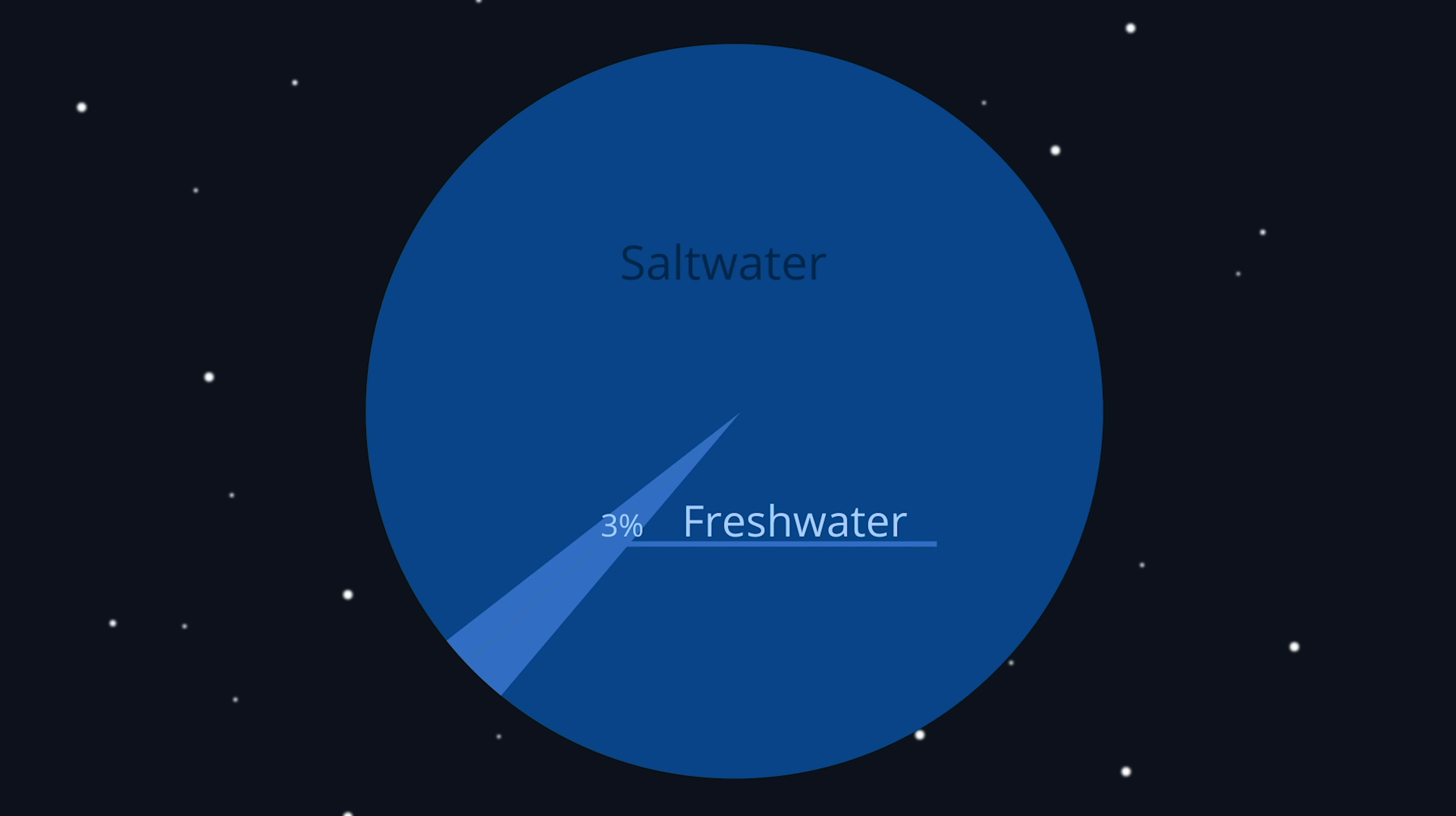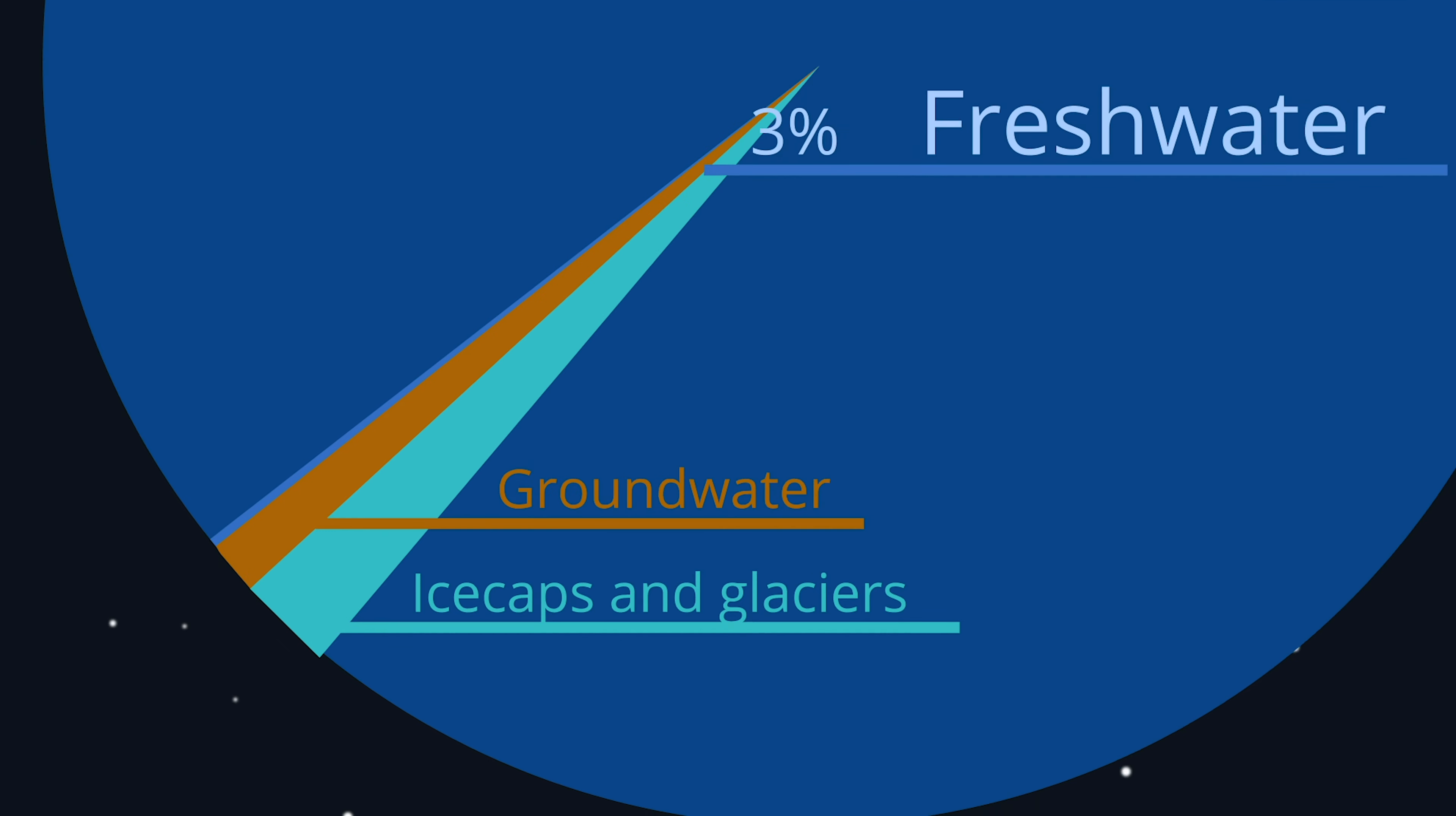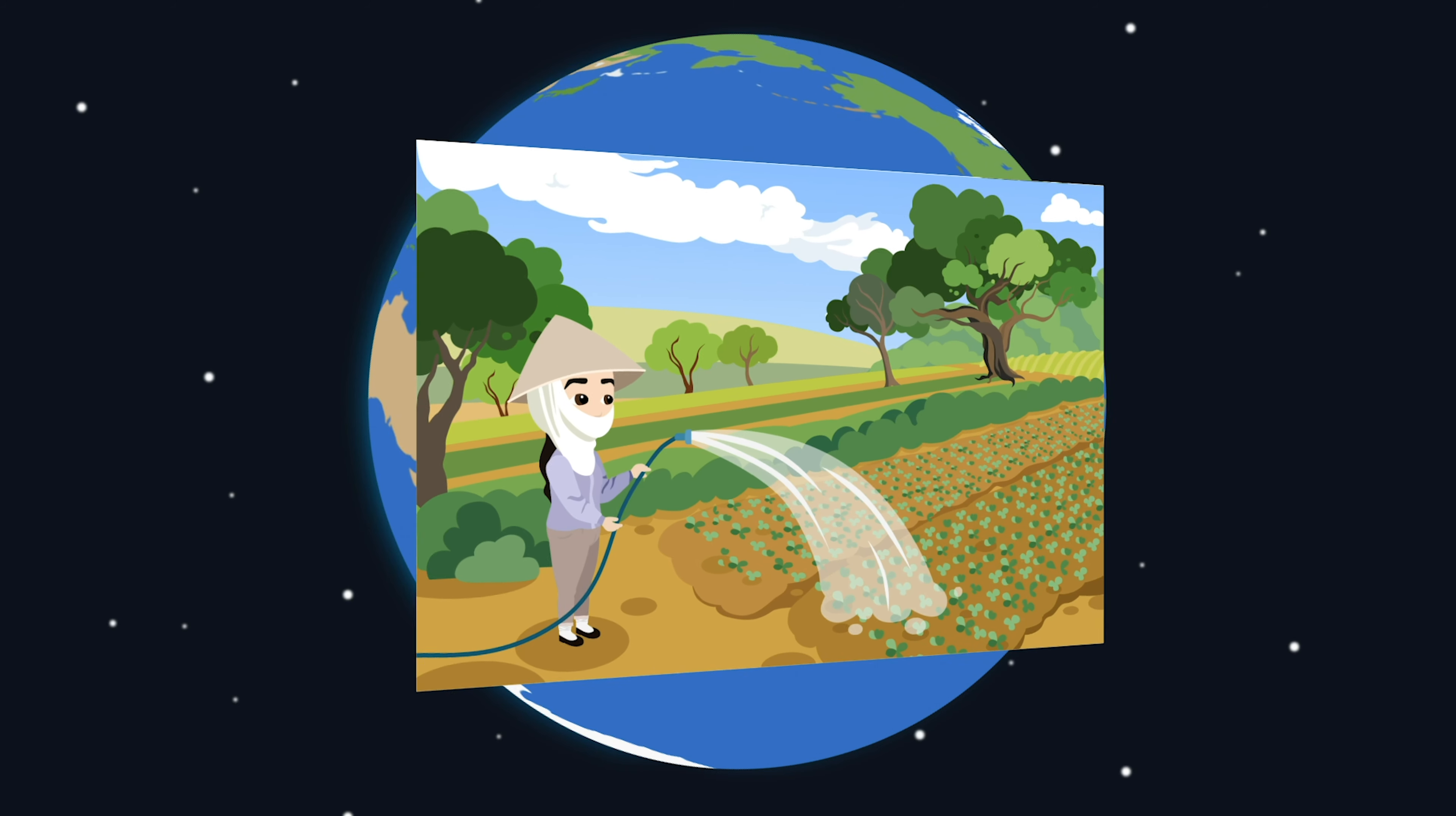A mere three percent of the earth's water is drinkable fresh water. But it's trickier than that. Most of the fresh water we can't even get to. It's in the form of ice at the poles or so deep down into the ground that we can't ever reach it.